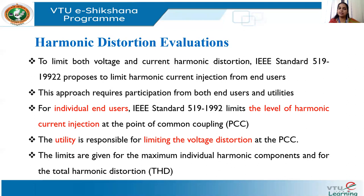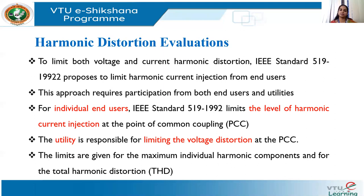There are standard values given by IEEE to limit these values. This is called harmonic evaluation. The limits are given for individual harmonic distortion and total harmonic distortion. We will evaluate these values and ensure they are within the limits described by the IEEE standard. We have seen the term 'point of common coupling' many times — all these limits depend upon the point of common coupling, so let us understand what PCC is.